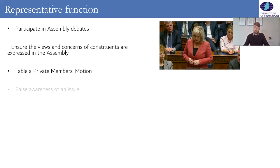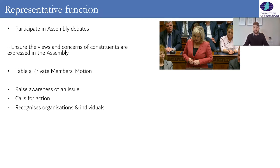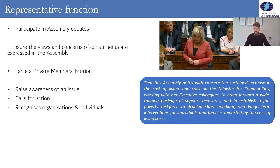An MLA could also table a private members motion, which would appear on the parliamentary order paper as a specific item of business, raising awareness of a specific issue. Sometimes it calls for action — asking a minister to do something about an issue — or it can recognise a particular organisation or individual within the constituency. For example, if there's a charity doing very good work, you could ask your MLA to table a motion recognising it. There's a recent example motion about the cost of living crisis from an Ulster Unionist MLA from East Belfast.